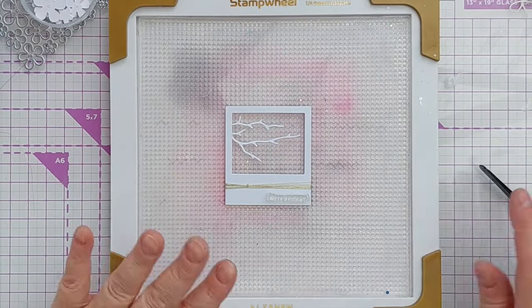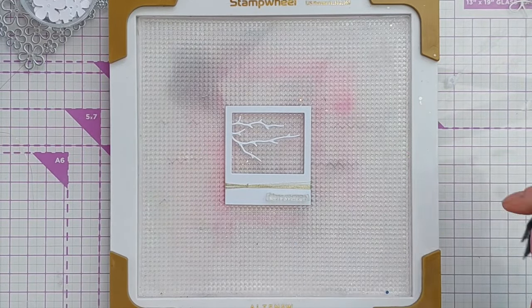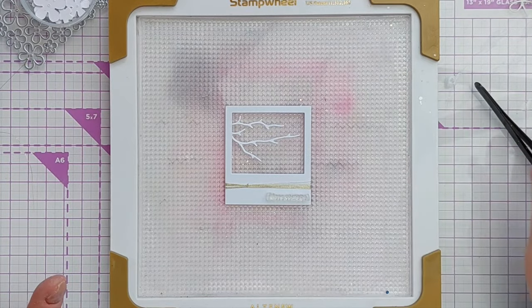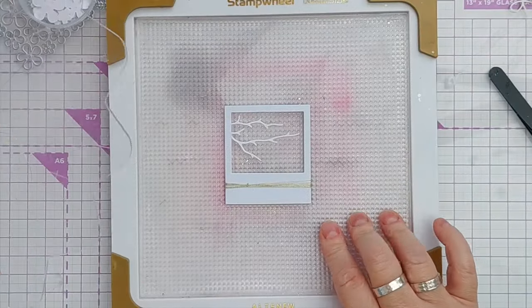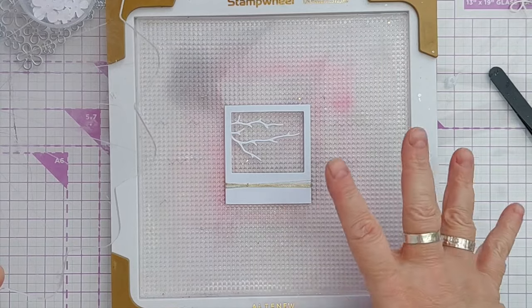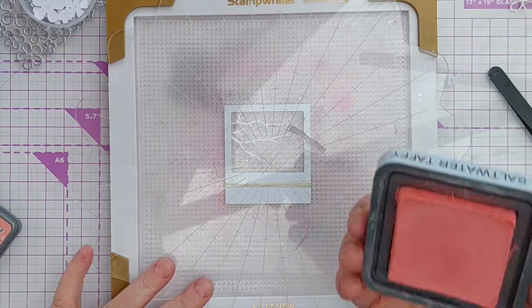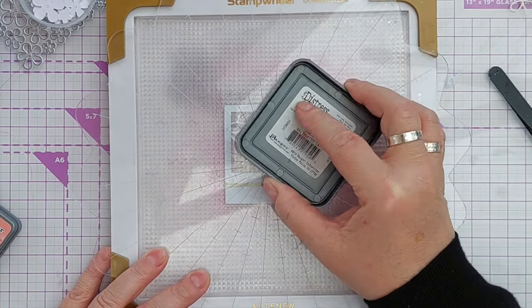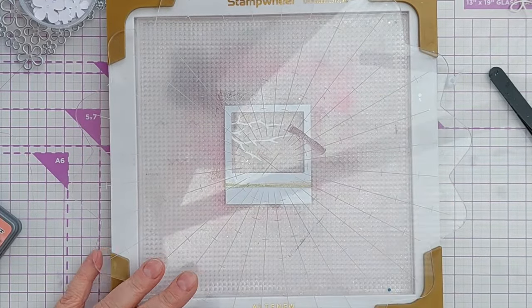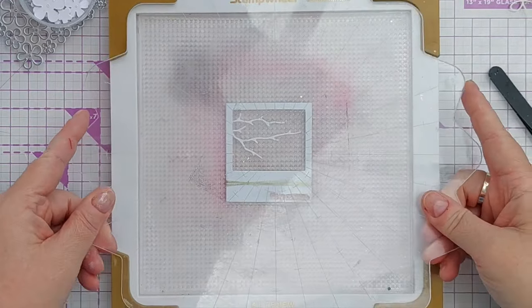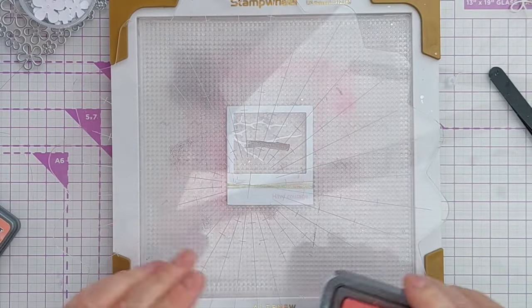One last step before I stick this to my card, and that is to add a small sentiment here on my frame. This just says 'have courage' in a nice small font. I'm using this stamping platform because it's got a grip mat in it, so I can put this die cut in and it won't shift around. And for my sentiment I'm going to use Saltwater Taffy, because it works nicely with the Sponge Sugar that I used, but it's a bit darker so it's good for stamping a sentiment. I think I'll do that one more time.